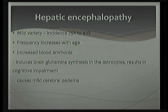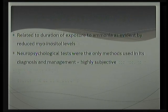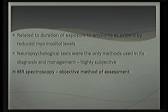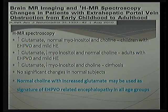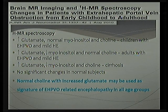Hepatic encephalopathy in these patients is usually of mild variety, but the incidence is quite alarming — about 25 to 40 percent. Until recently, no objective method of assessment existed, with only subjective neuropsychological tests available. Proton magnetic resonance spectroscopy has now emerged as an objective method, analyzing metabolites in the brain — particularly glutamate, myo-inositol, and choline. Increased glutamate is seen in any liver failure. In children with EHPVO, myo-inositol levels are low and choline levels are normal, whereas in adults as disease progresses myo-inositol decreases and in cirrhosis choline levels are also reduced.